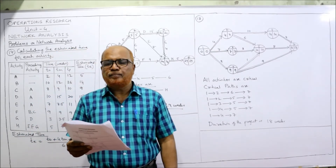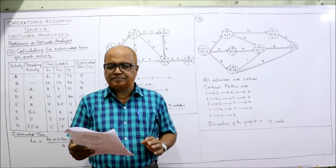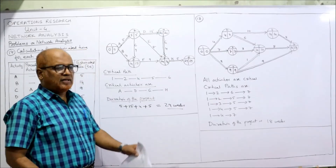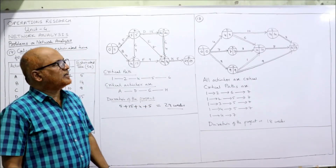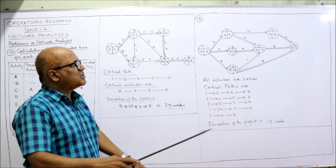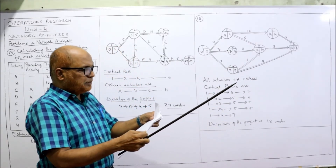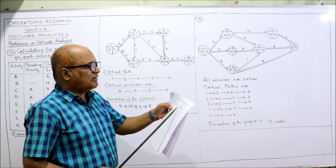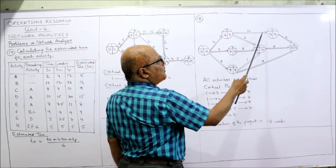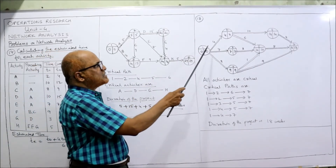Now the last problem, Problem 18. We need to draw the network diagram and show the critical path with EST and LFT values. Time estimates are given for each activity pair. From node 1: activities go to nodes 2, 3, and 4. From node 2: activities go to nodes 5 and 6. Nodes 4, 2, and 3 all merge into node 5. Nodes 4, 5, and 6 merge into node 7. Write the time estimates on each activity.